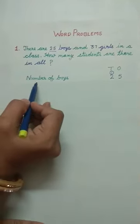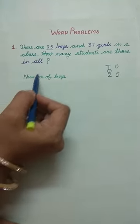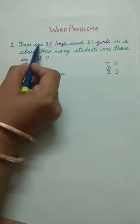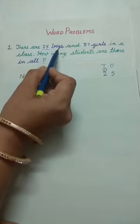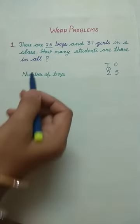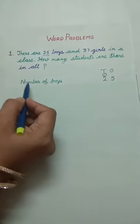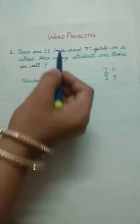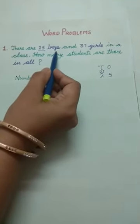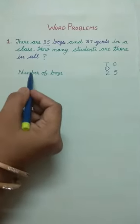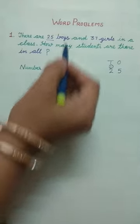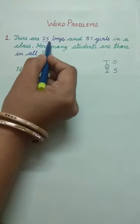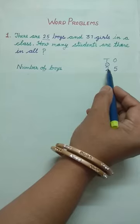First statement we make with the help of first line. There are 25 boys. When we make our statement, first we write the word 'number of.' As we are talking about boys, here we write number of boys. That is 25.